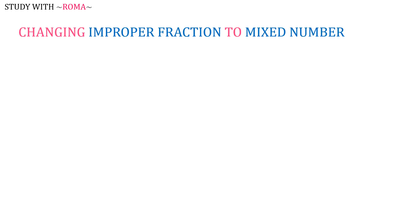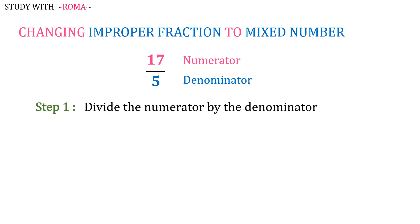Now let's change an improper fraction to a mixed number. 17 over 5 is an improper fraction. 17 is the numerator and 5 is the denominator. Step 1: divide the numerator by the denominator. 17 divided by 5 is equal to 3 remainder 2.